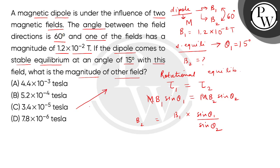Representing this with a diagram: B1 and B2 with an angle of 60 degrees between them. When the magnet is in stable equilibrium, the dipole axis makes 15 degrees with the first field. Therefore, with the second field, the angle is 60 - 15 = 45 degrees.